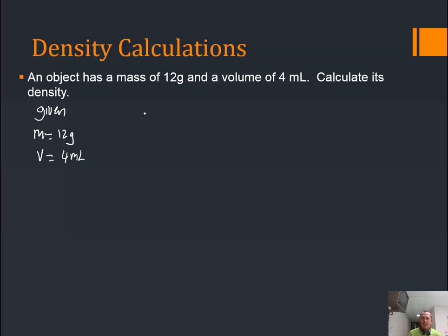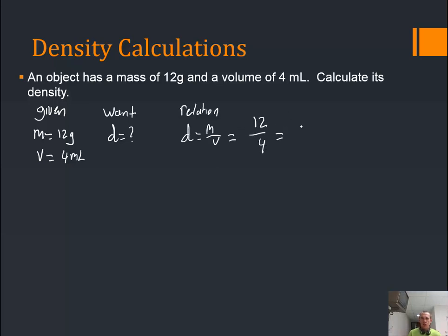What I want is density, D — that's my question mark. I know all my information and I know what I want. The relationship is: density equals mass divided by volume. So this would be 12 divided by 4, which equals 3. Pay attention to your units — mass was given in grams, volume in milliliters, so this is 3 grams per milliliter. Not too tricky.